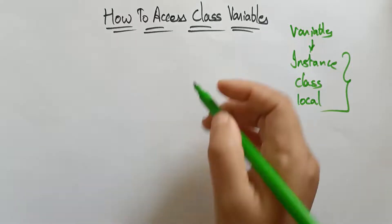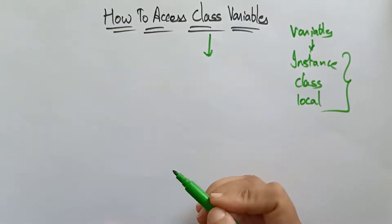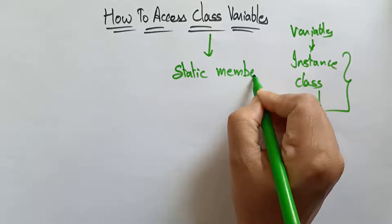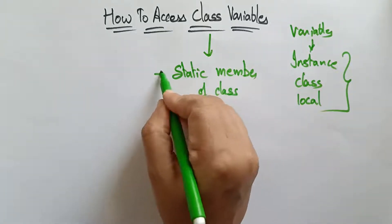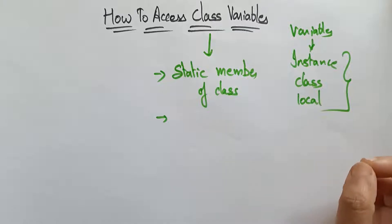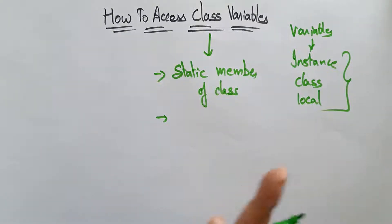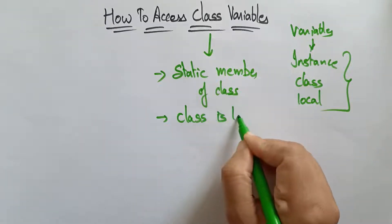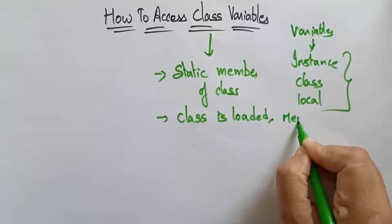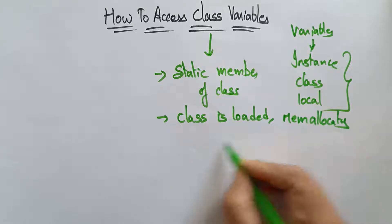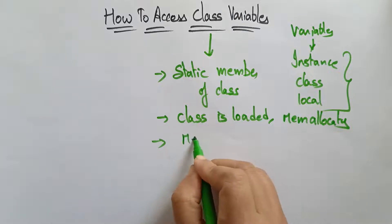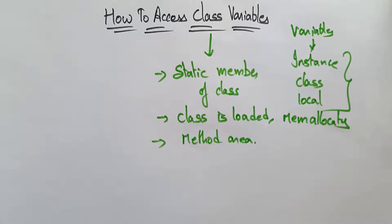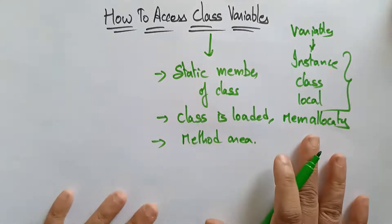Let's recall what is a class variable. A variable that is defined as a static member of a class is called a class variable. Memory is allocated to class variables whenever the class is loaded. Class variables are stored in the method area.